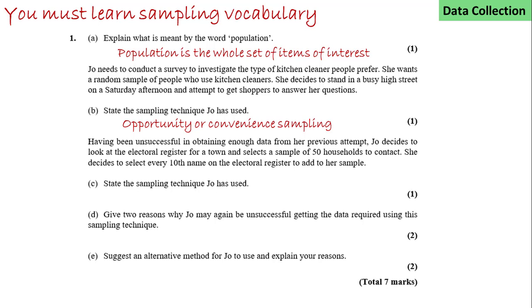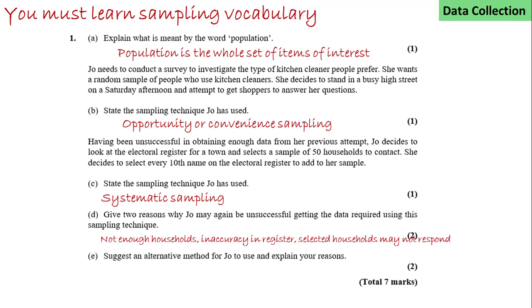Having been unsuccessful in obtaining enough data, she tries to look at the electoral register for a town and selects a sample of 50 households to contact. She decides to select every tenth name on the electoral register to add to her sample. Here Jo has used systematic sampling. Reasons why this might be unsuccessful: there may not be enough households, there can be inaccuracies in the register, and some of the selected households may not respond.